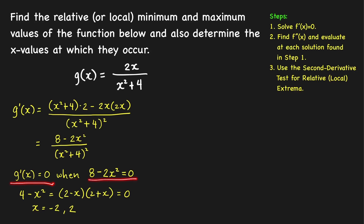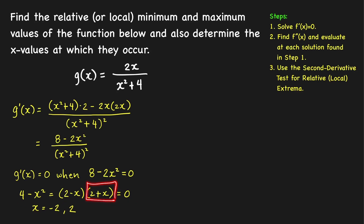The derivative equals zero when the numerator equals zero — note that the denominator is always nonzero. Dividing by 2 gives us 4 minus x squared, which factors as 2 minus x times 2 plus x equals 0. So the critical numbers are x equals negative 2 and x equals 2.